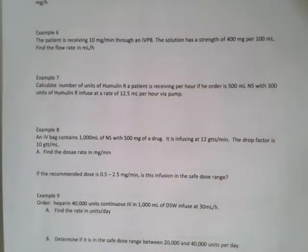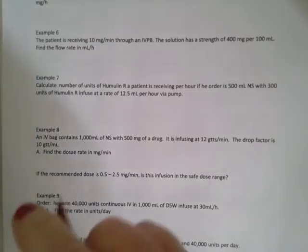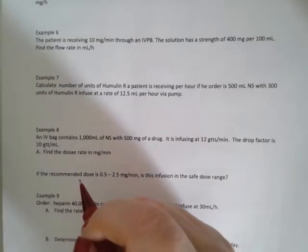20 part 2. So here we're talking about an IV infusing at 100 milliliters per hour. The strength is 200 milligrams in 500 milliliters. Find the dosage rate in milligrams per hour. Remember the dosage rate is the drug over time.